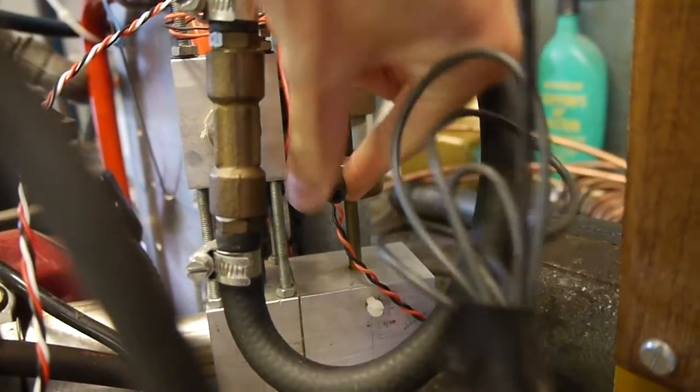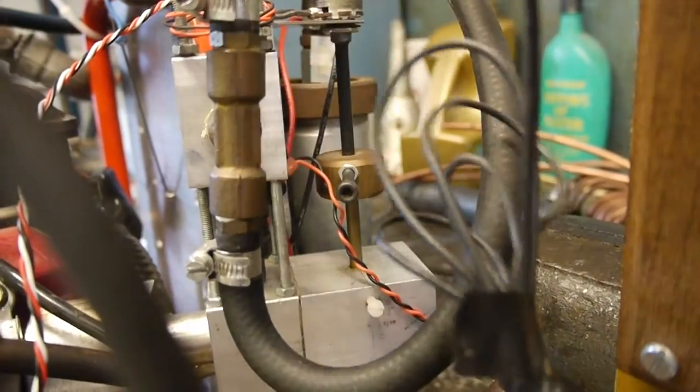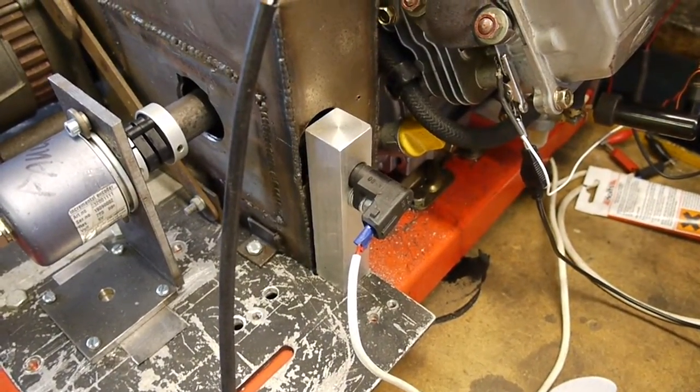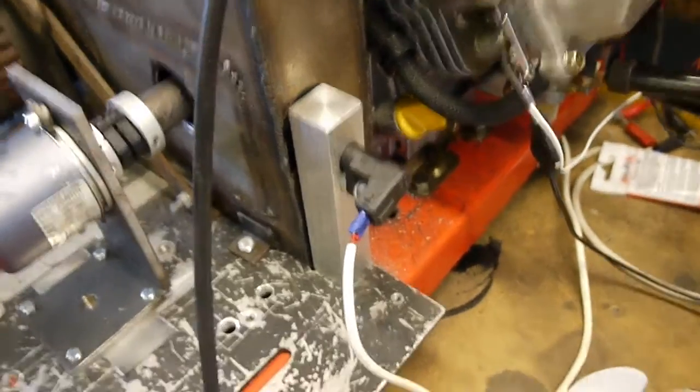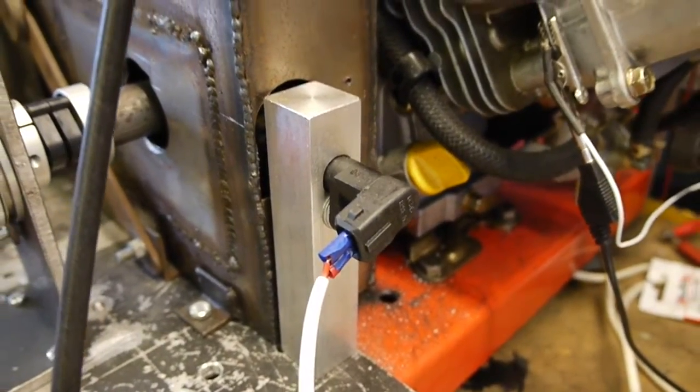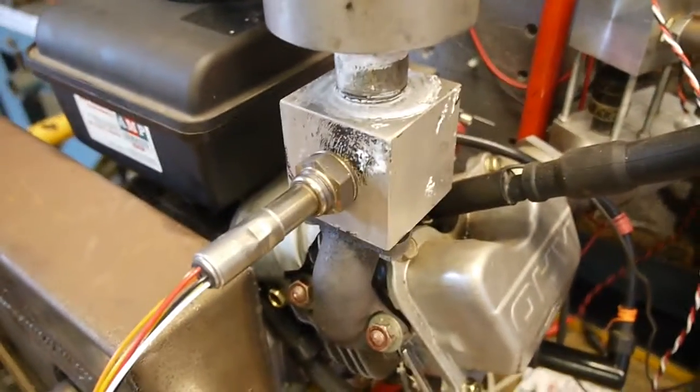There's a throttle here which has a throttle position sensor on it. There's a crankshaft position sensor here, and a lambda sensor in the exhaust.